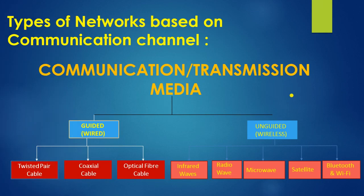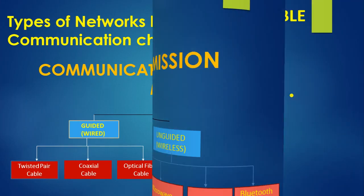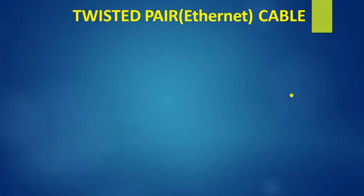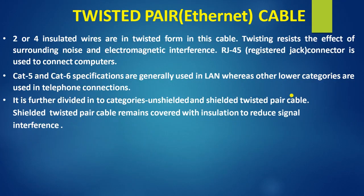This diagram shows types of network based on communication channel — wired or wireless. In wired: twisted pair cable, coaxial cable, and optical fiber. In wireless: infrared, radio waves, microwave, satellite, Bluetooth, and Wi-Fi.